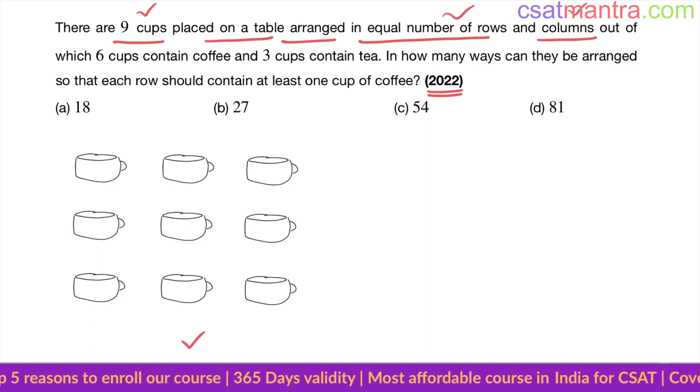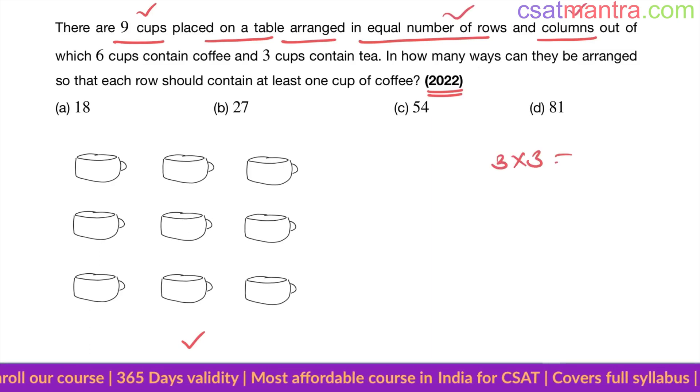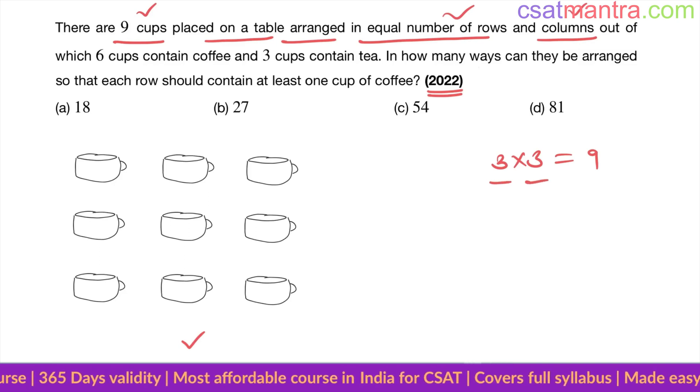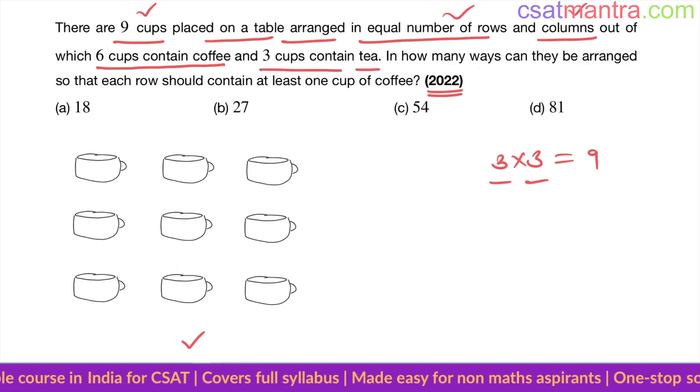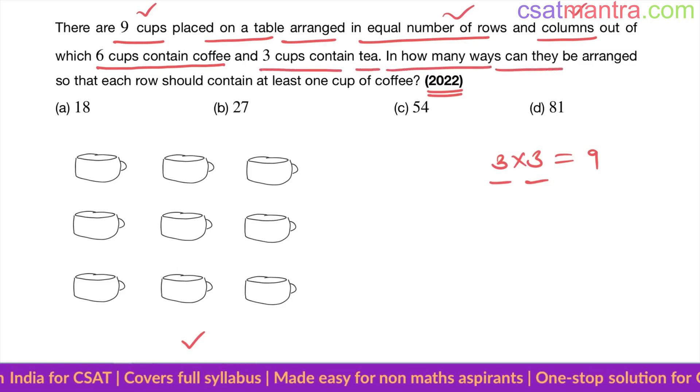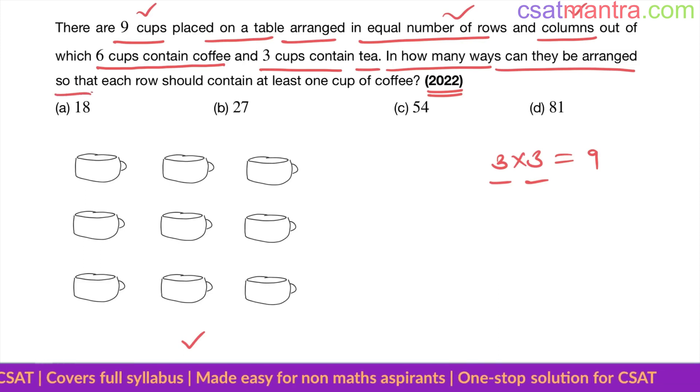Nine cups, three rows and three columns. Out of which six cups contain coffee, three cups contain tea. In how many ways can they be arranged so that each row should contain at least one cup of coffee?